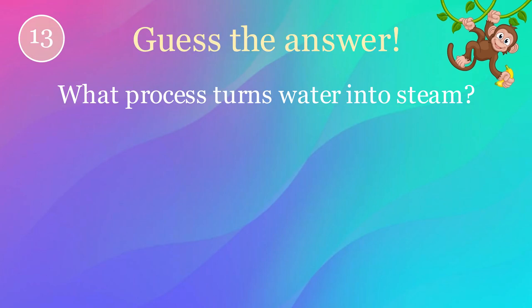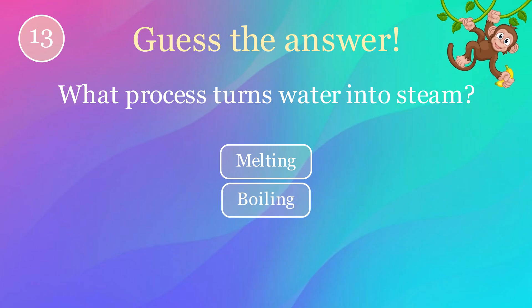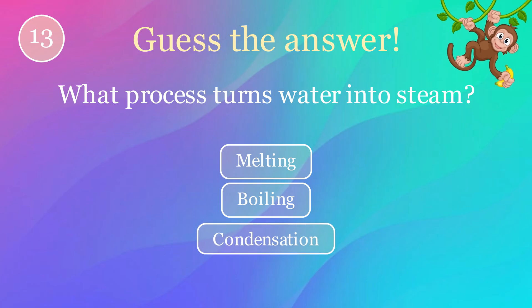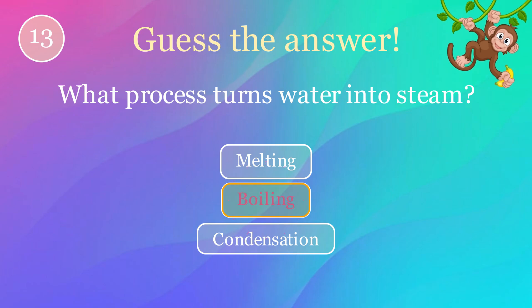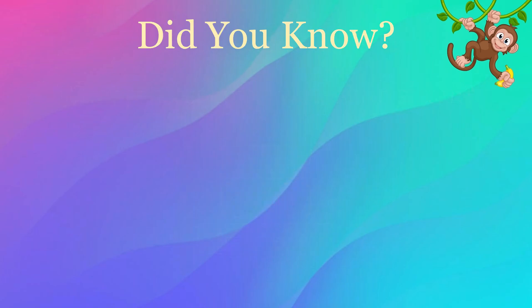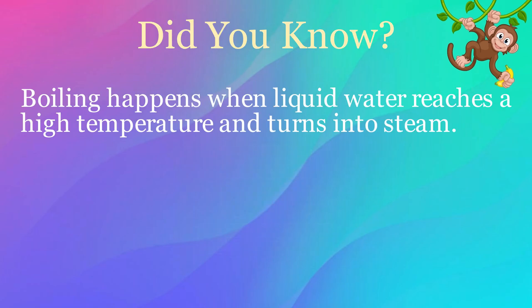What process turns water into steam? Options: melting, boiling, condensation. The correct answer is boiling. Here's an interesting fact: boiling happens when liquid water reaches a high temperature and turns into steam.